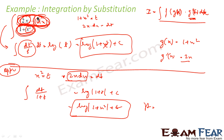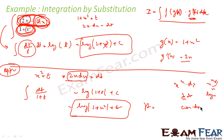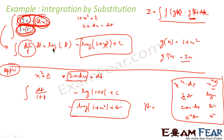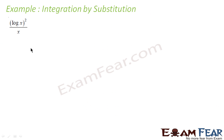Since these integrals are very complex, we try to convert them into simpler form using substitution. Let's take another example: find the integral of (log x)² dx. If I assume log x as t, I get (1/x) dx = dt, so that factor is taken care of, and my equation reduces to the integral of t² dt, which is easy to find.